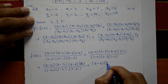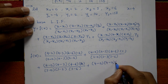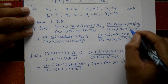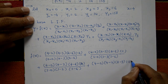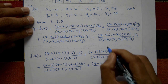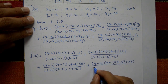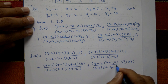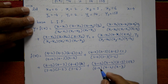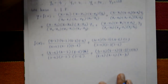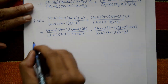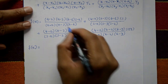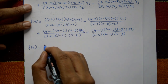Plus fourth term: (4 − 0)(4 − 2)(4 − 3) into y₃ = 158, divided by (6 − 0)(6 − 2)(6 − 3). Now f(4) is equal to — computing each term separately.